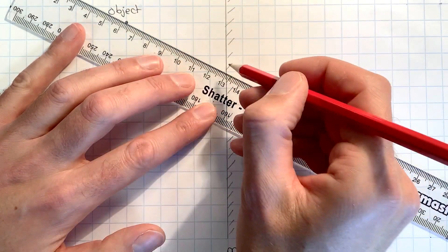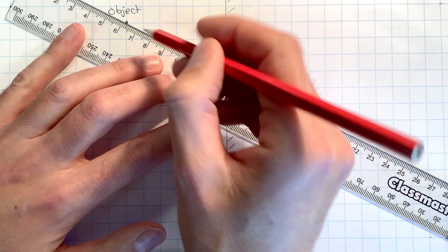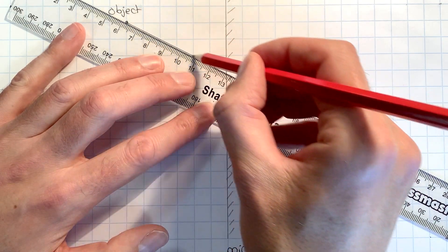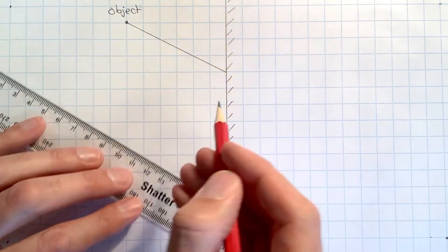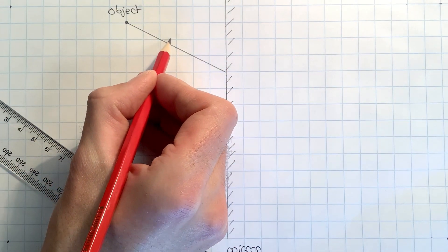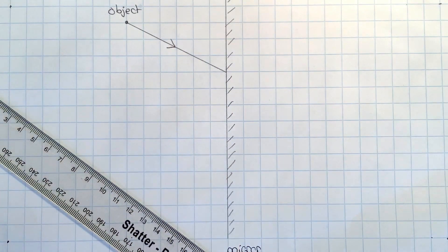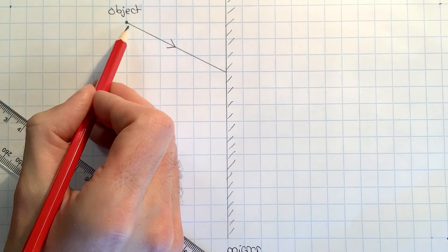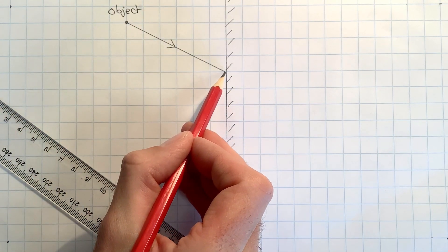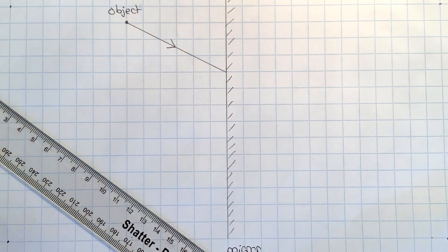I'm going to do that so it hits exactly on the corner of one square and you'll see why that's helpful in a minute. To show which way the light's going, I'm going to draw an arrow on that. This is called the incident ray because that is the ray of light which is incident on the mirror.